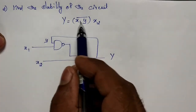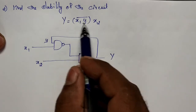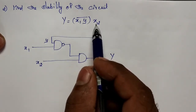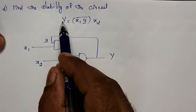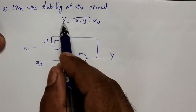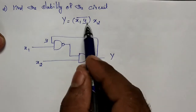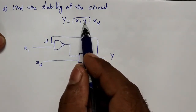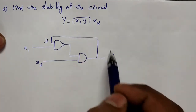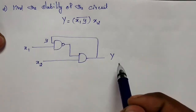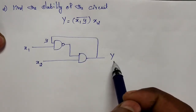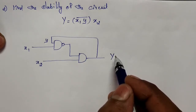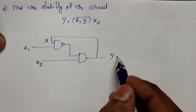In this circuit we have x1 and x2 as inputs, capital Y as the next state, and small y as the present state. The next state capital Y is fed back as the present state y through the output excitation.